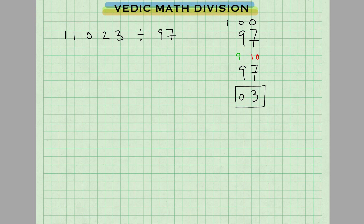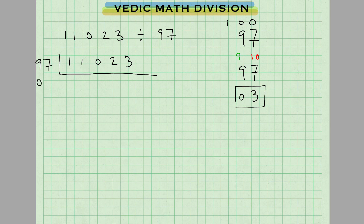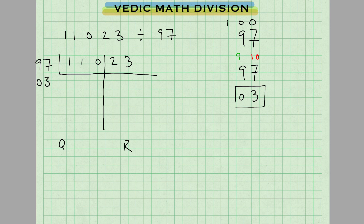To set up the problem, first we're going to write the dividend. We write the divisor 97 and the complement of 97, which is 3, like so. Now we're working off of base number 100, so there are two zeros in the base. That means from the right we're going to go two digits in and draw a line. That separates the quotient on the left from the remainder on the right.